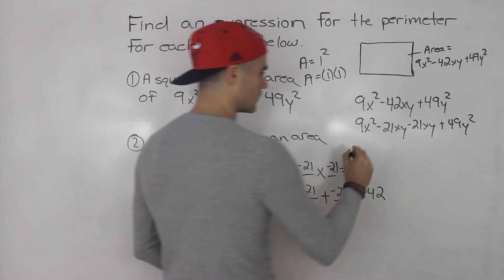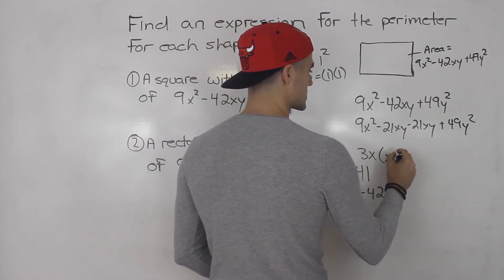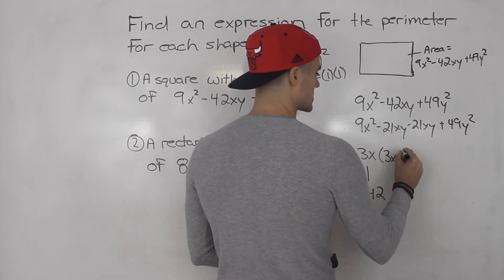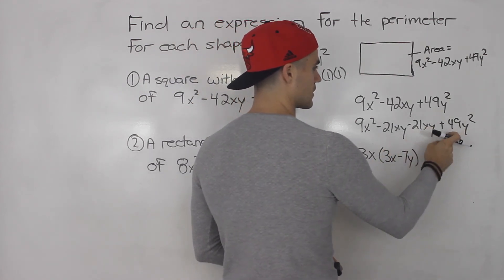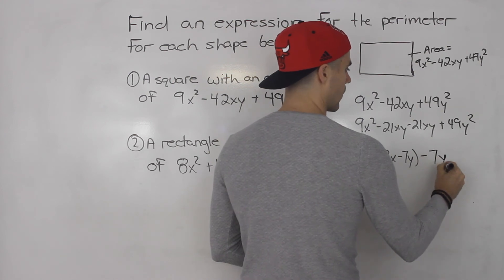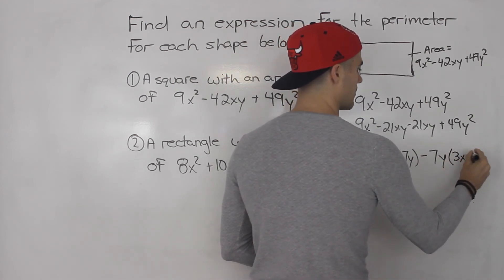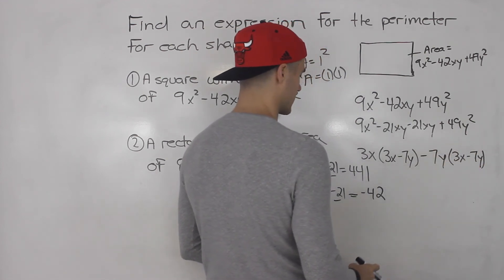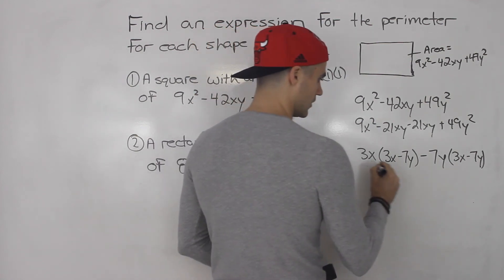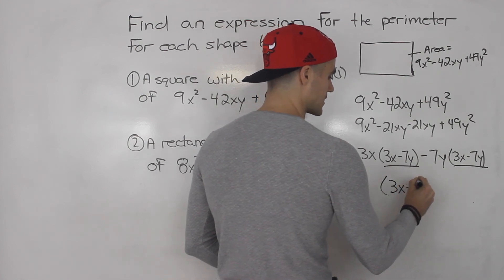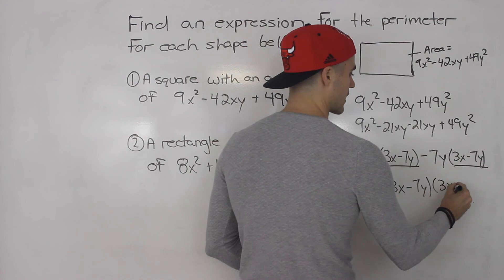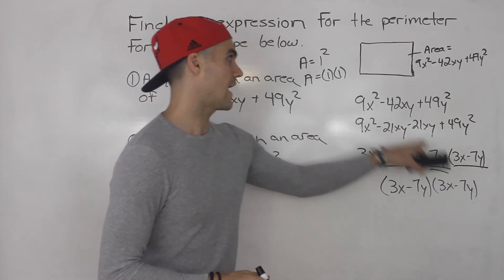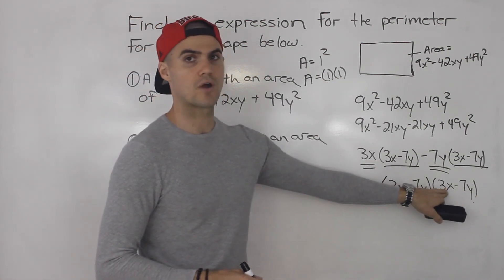From the first two terms we factor out 3x, leaving us with 3x minus 7y. From the last two terms we factor out negative 7y — 21xy divided by 7y gives 3x, and 49y squared divided by 7y gives 7y — leaving 3x minus 7y. We then factor out the common bracket 3x minus 7y, giving us (3x minus 7y) squared. This is a perfect square trinomial, which makes sense because the side lengths of a square must be equal.